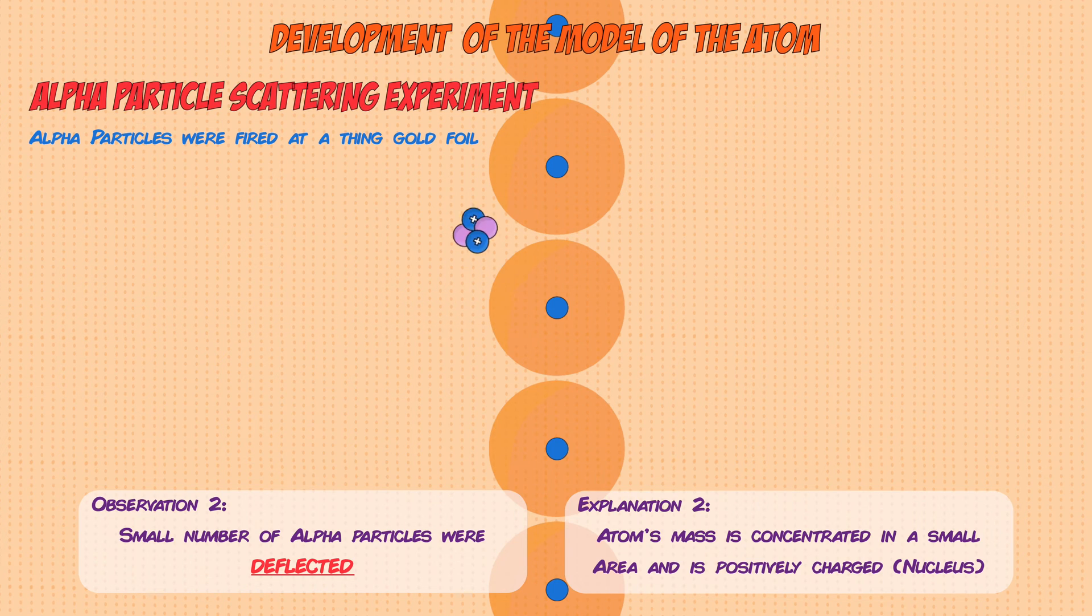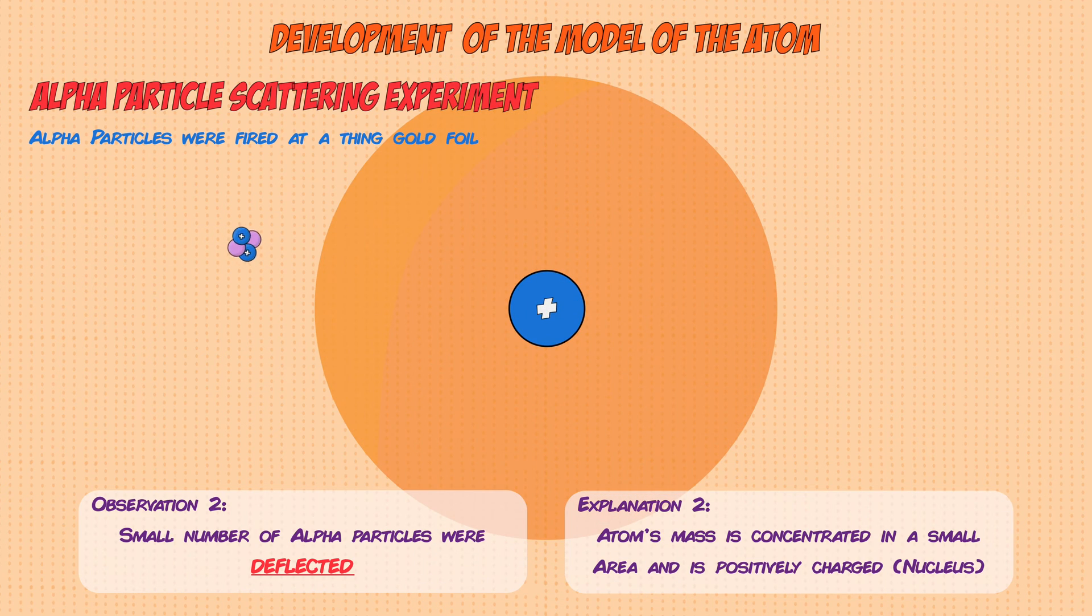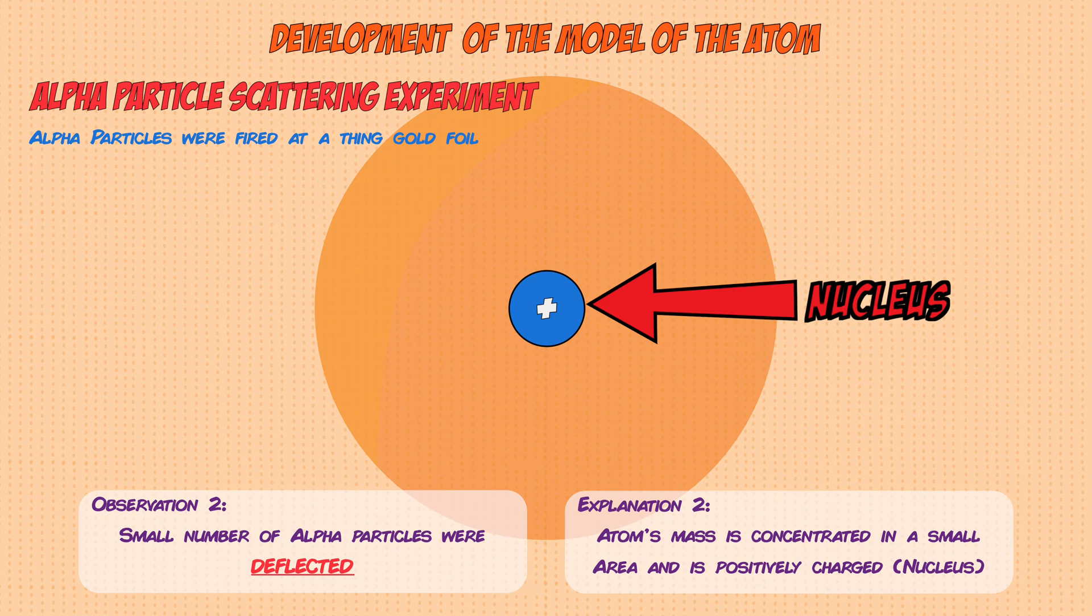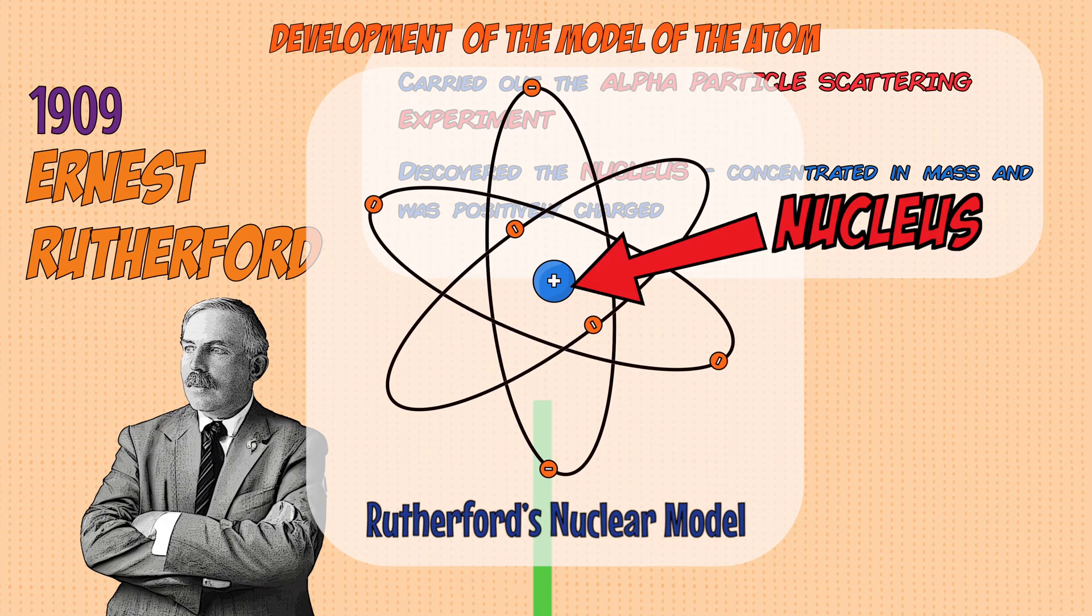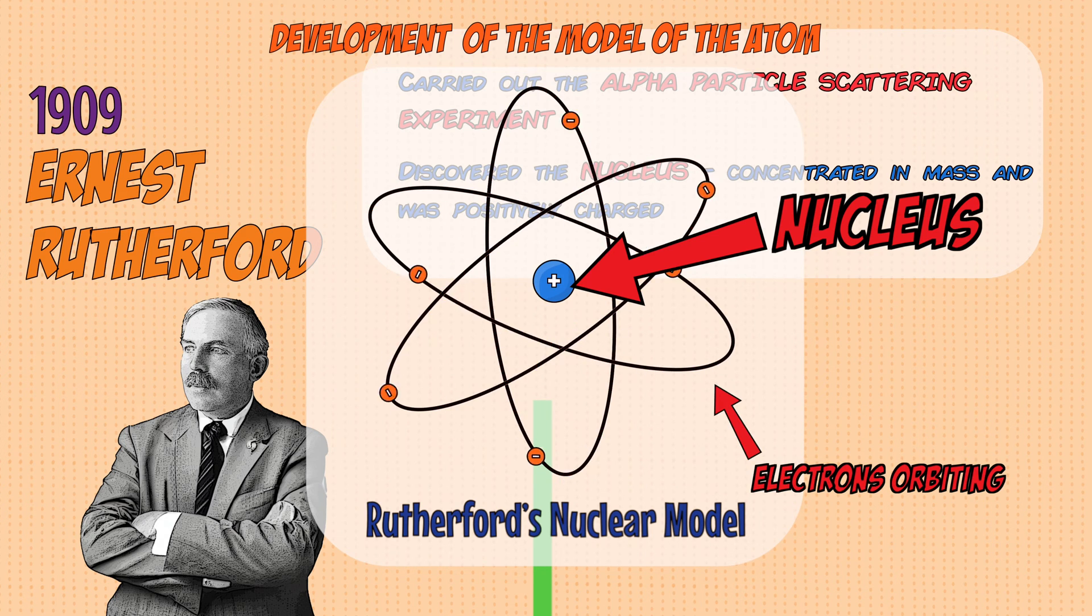This central mass must have been positively charged because the alpha particles that were fired at it were also positively charged. So if they were deflected away, they must have been repelled when they got close to it. This gave rise to the idea of a nucleus and the plum pudding model was replaced with the nuclear model, which had a nucleus with the negatively charged electrons orbiting it.